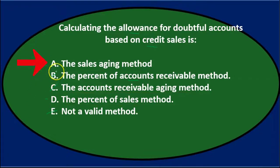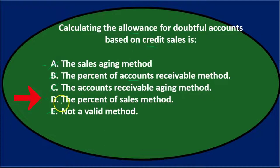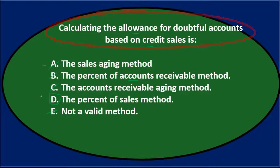The aging method is typically applied to receivables — that's what we age. On the sales side, we take a percentage of sales or credit sales. So D is the more correct answer. Calculating the allowance for doubtful accounts based on credit sales is D — the percentage of sales method.